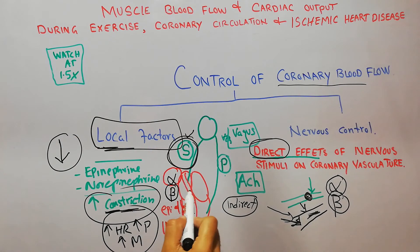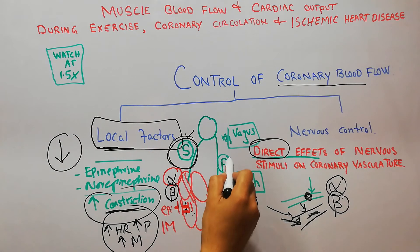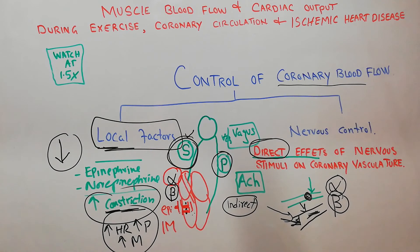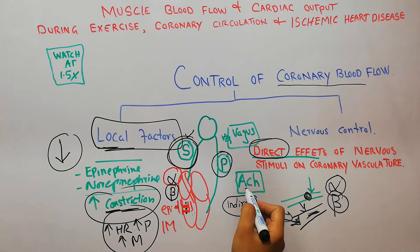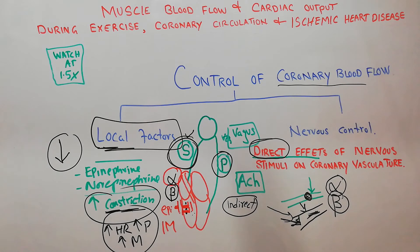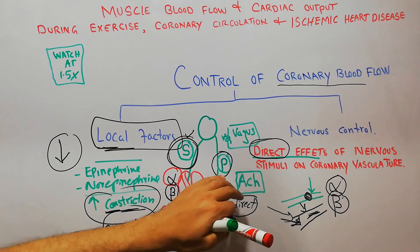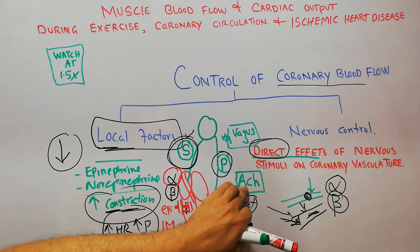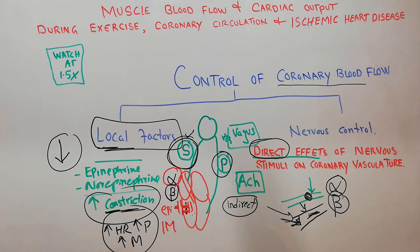The heart also has some parasympathetic innervation. The neurotransmitter secreted from the parasympathetic nerves is acetylcholine.